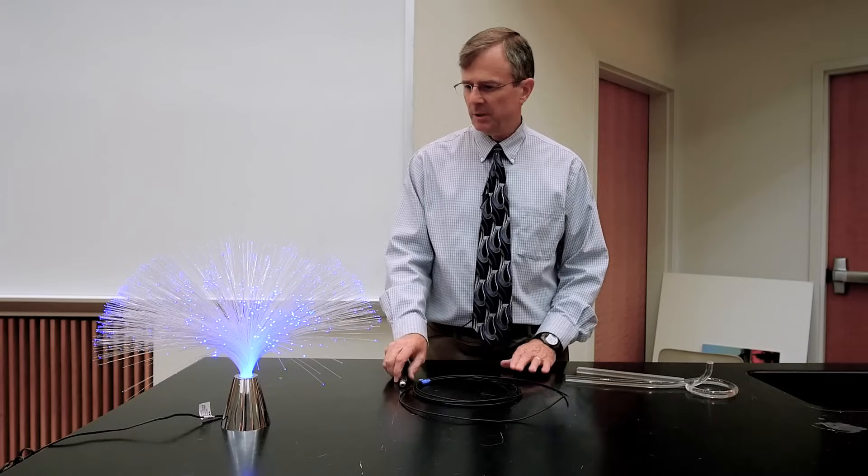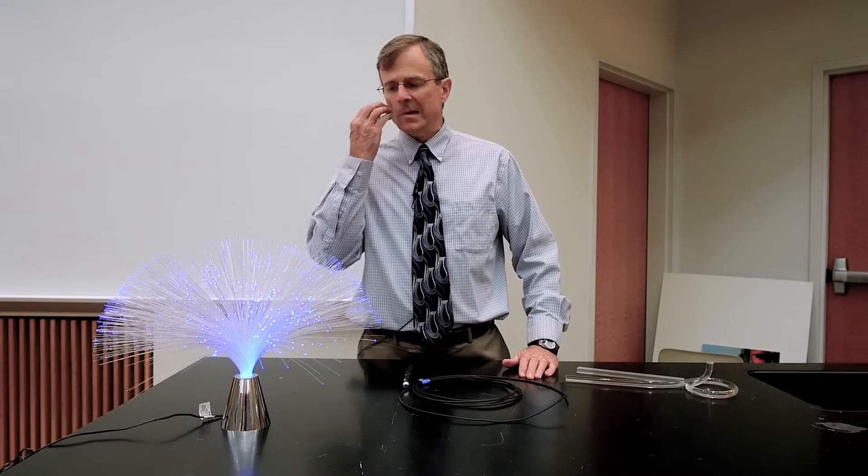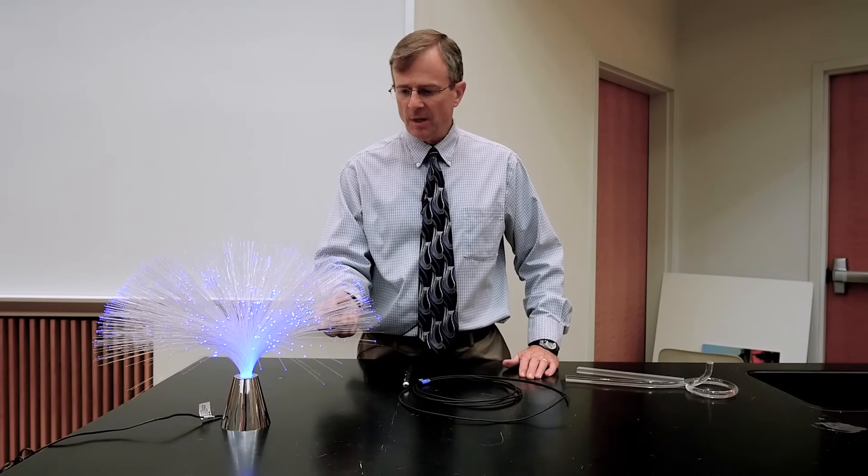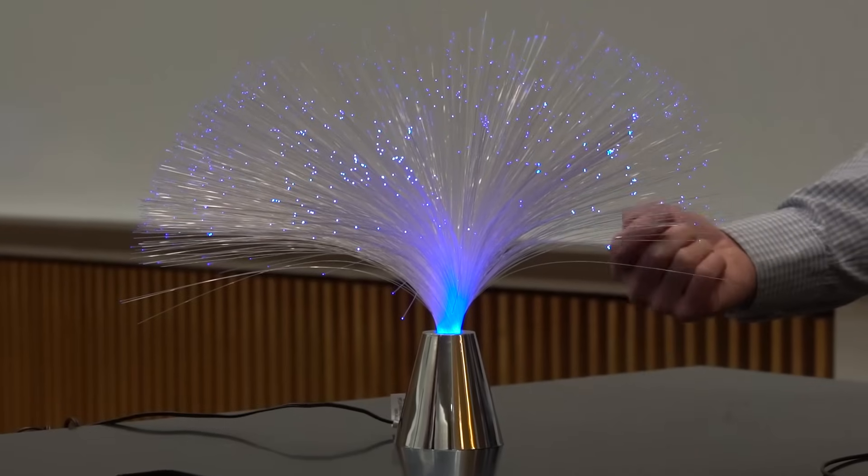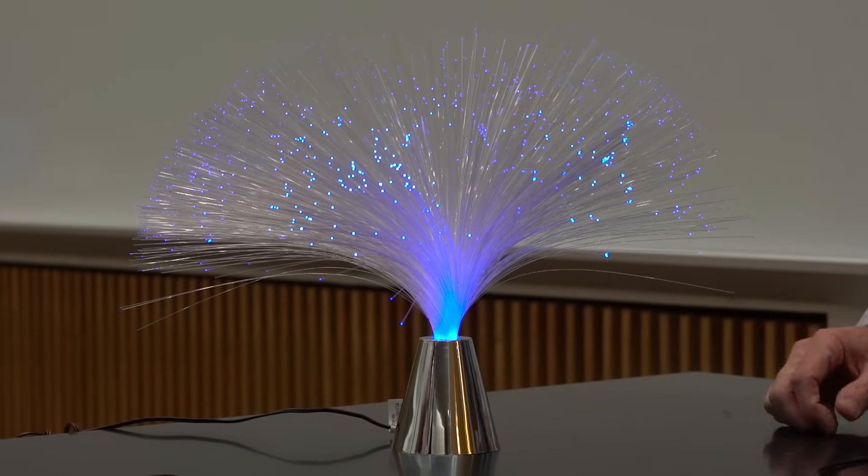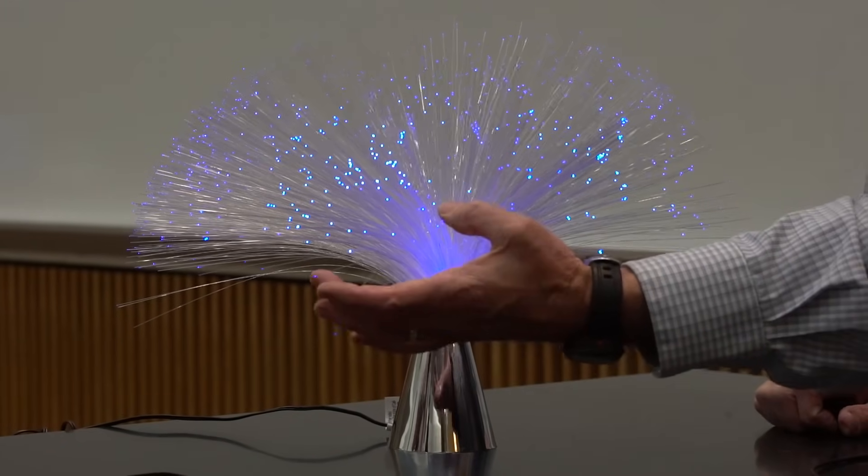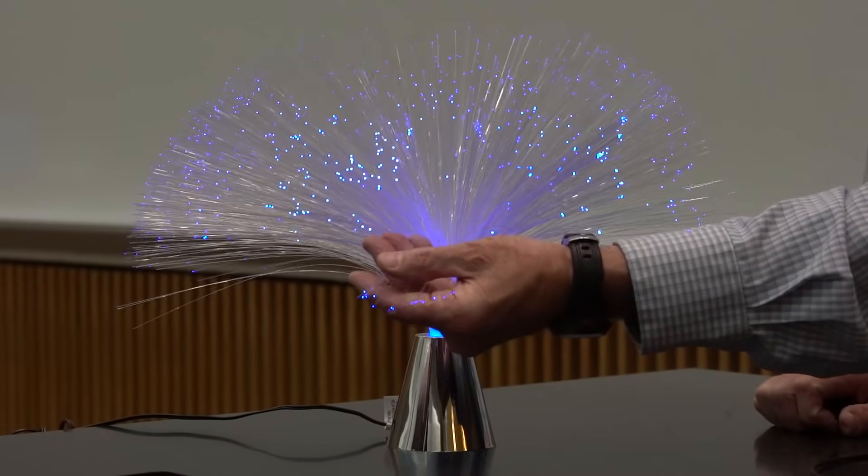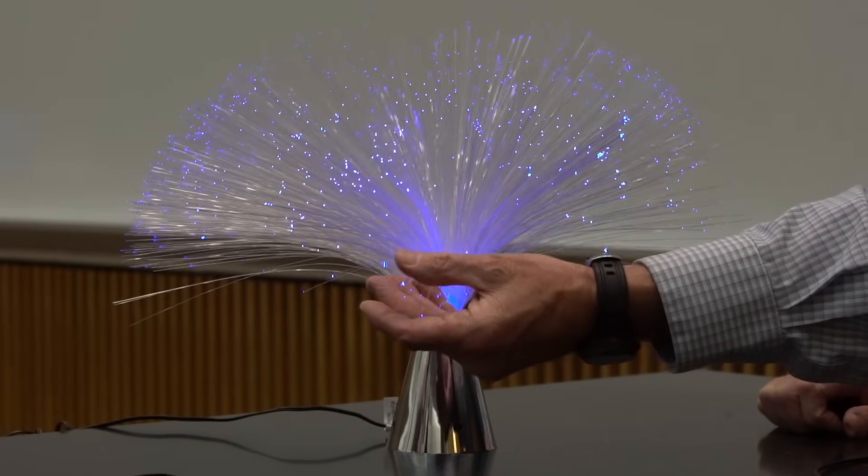This is an example where we have a source of light in the base here. And each of these, all they are are strands of plastic, and they are channeling the light through them. And they can be bent, and they'll still channel that light.